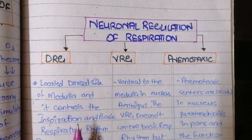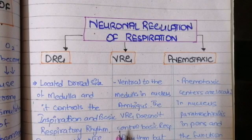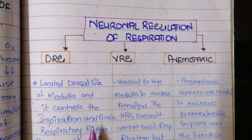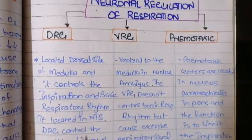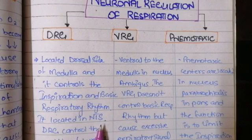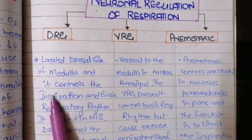The dorsal respiratory group controls inspiration and also controls the basic respiratory rhythm — that is, the quiet respiration performed during the resting state. The normal quiet respiratory rhythm is maintained by the dorsal group of neurons. It is located in the nucleus tractus solitarius, which is connected with the vagus nerve and the glossopharyngeal nerve, sending signals to the dorsal respiratory group of neurons and causing contraction of the inspiratory muscles, ultimately increasing the rate of inspiration.